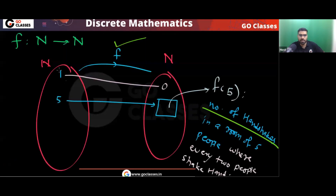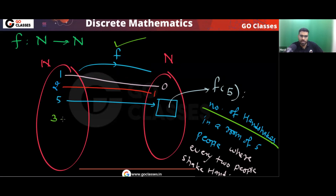So if you have only one person, there will be zero handshakes. If you have two people, only one handshake will be there. If you have three people, there will be three handshakes.